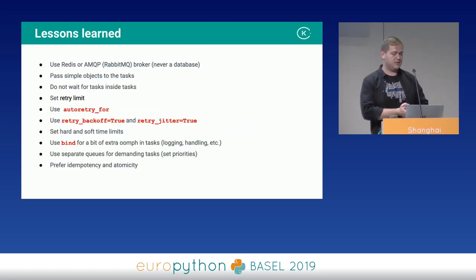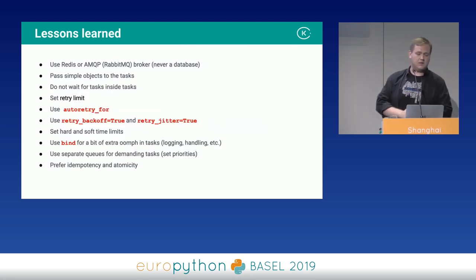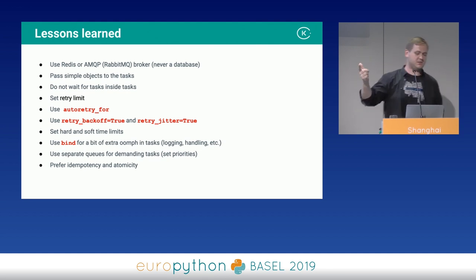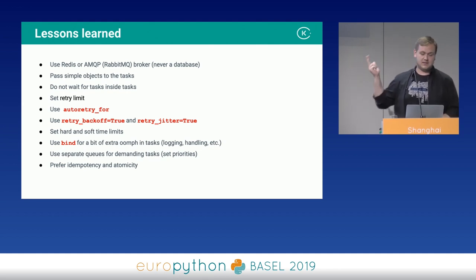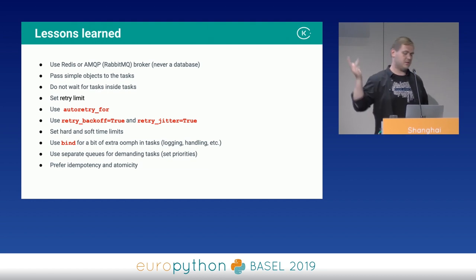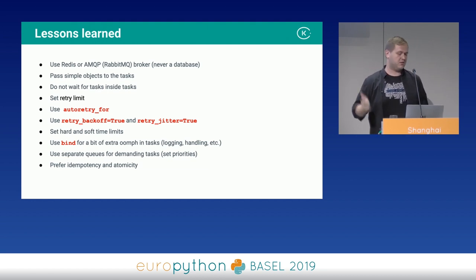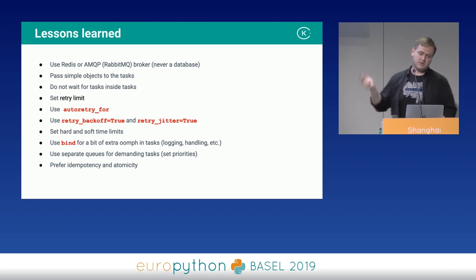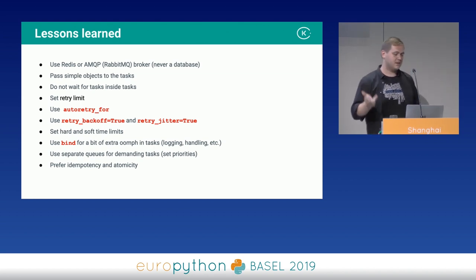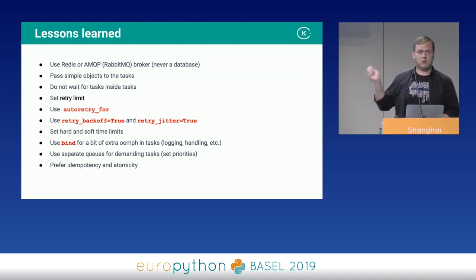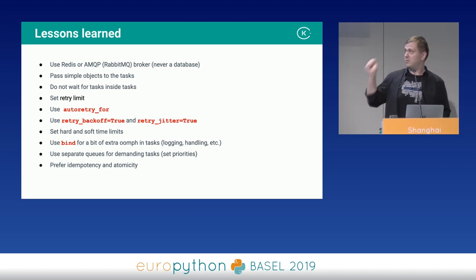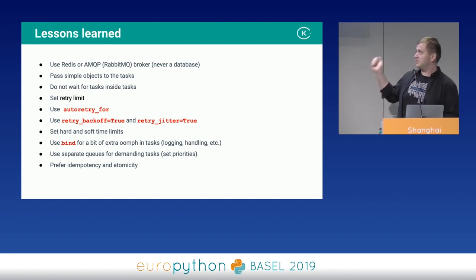To sum up: use Redis or AMQP, pass simple objects to tasks, don't wait for tasks inside tasks, set a retry limit, use autoretry, use backoffs, use jitter, use time limits, use bind, use separate queues, and always prefer idempotency and atomicity. Those are the lessons learned.